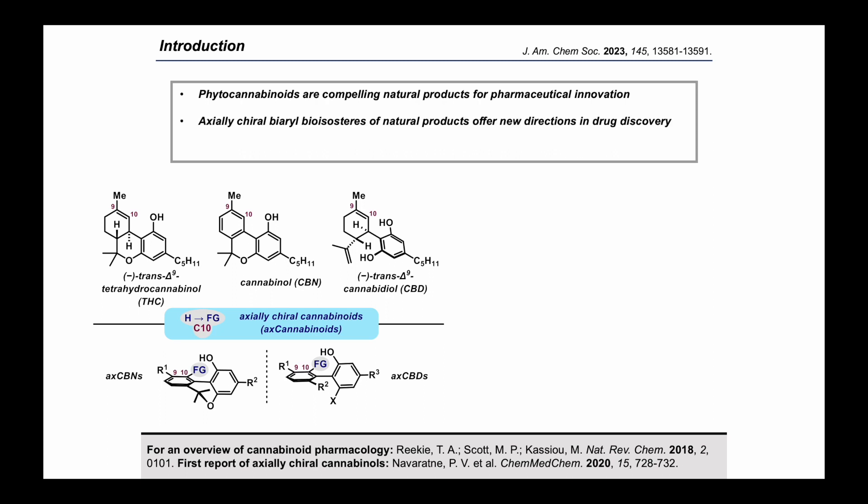The Grenning lab recently proposed that axially chiral analogs of cannabinoids may serve as valuable tool compounds and potential leads in cannabinoid-based drug discovery. The philosophy guiding the conception, design, and synthesis of axially chiral cannabinoids, or ax cannabinoids, is threefold. First, ax cannabinoids are three-dimensionally biased ligands in which ortho-substitution produces rotational and dihedral angle restrictions about the biaryl linkage. Second, ax cannabinoids are built upon a central biaryl framework, which is a common template in pharmaceutical development. Third, atropisomerism in cannabinoids is unexplored and aligns with the recent call from Shenvi and coworkers for creative editing of natural products.